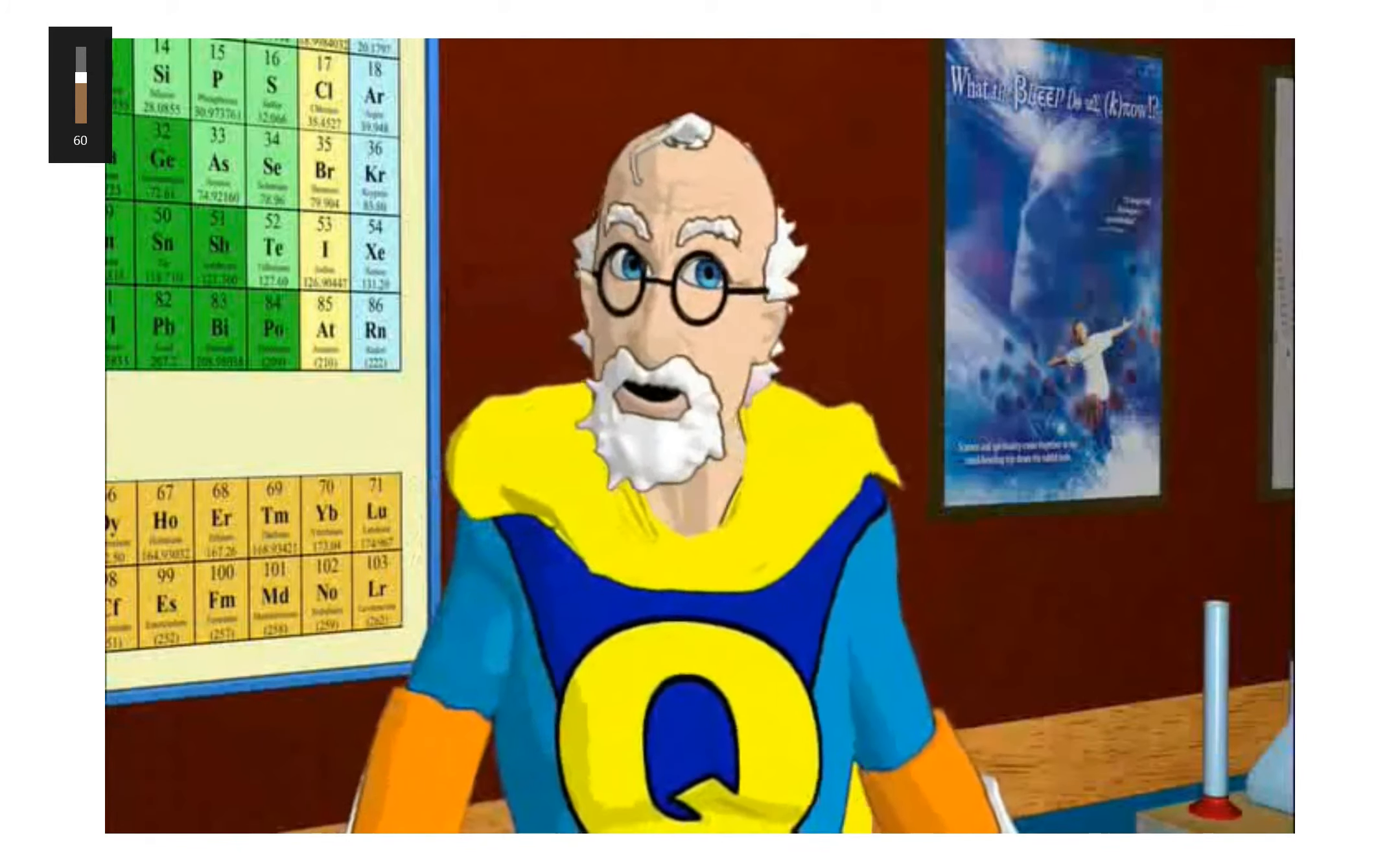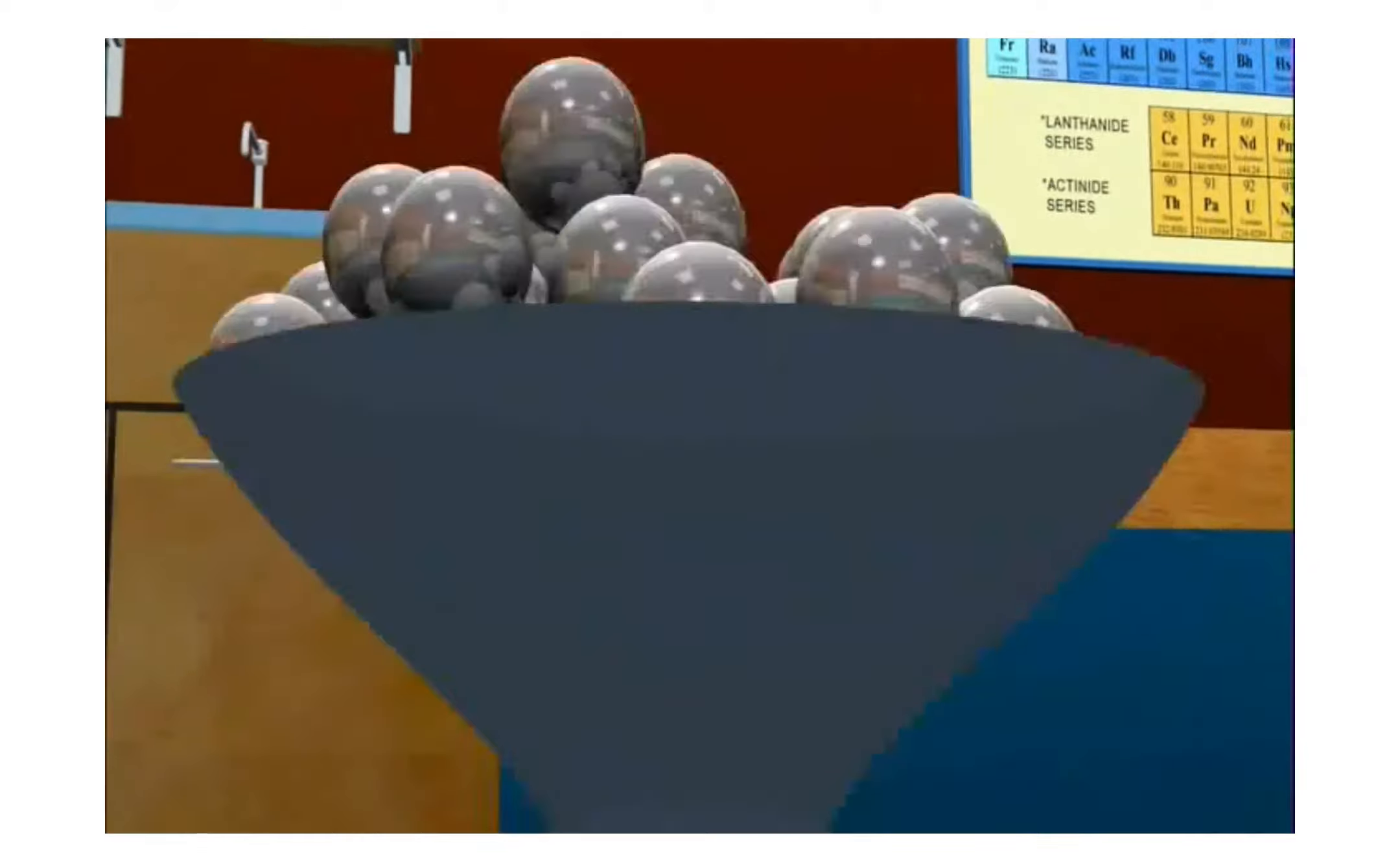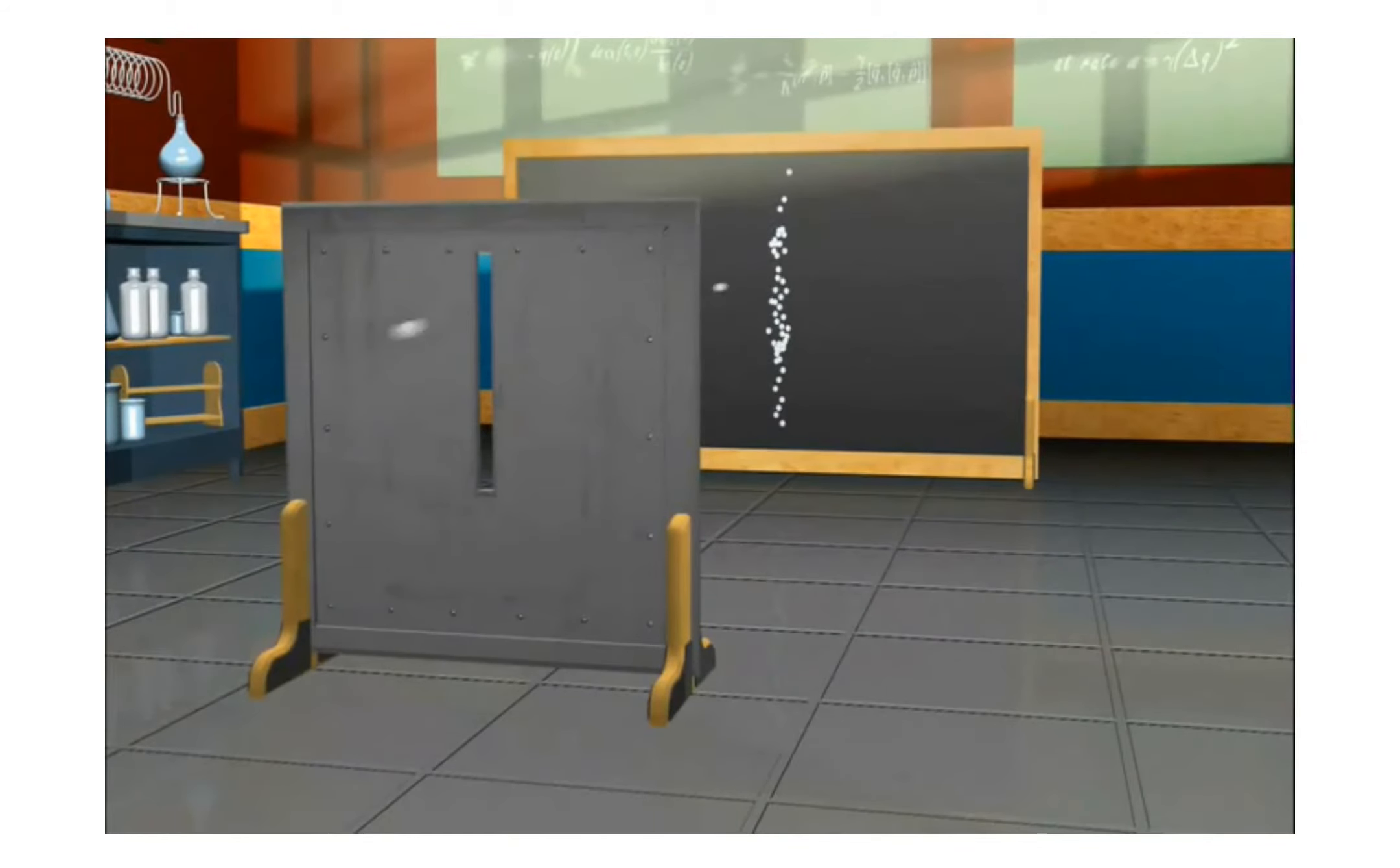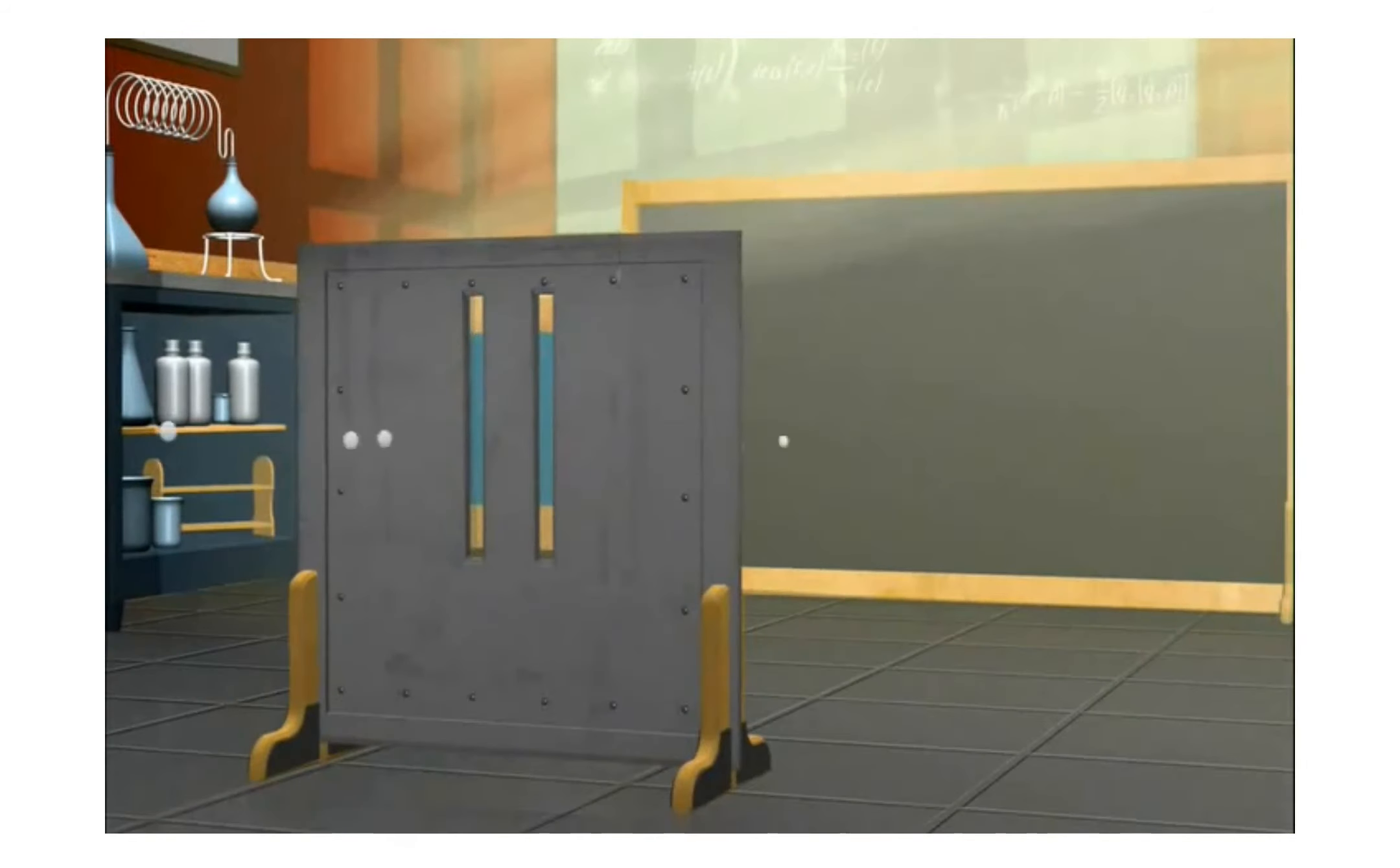To understand this experiment, we first need to see how particles or little balls of matter act. If we randomly shoot a small object, say a marble, at the screen, we see a pattern on the back wall where they went through the slit and hit. Now, if we add a second slit, we would expect to see a second band duplicated to the right.